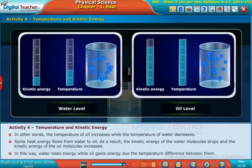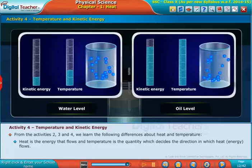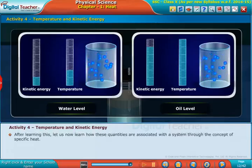From activities 2, 3, and 4 we learn the following differences about heat and temperature: heat is the energy that flows, and temperature is the quantity which decides the direction in which heat energy flows. After learning this, let us now learn how these quantities are associated with the system through the concept of specific heat.